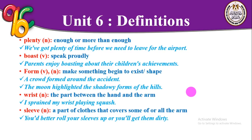We have two words related to the human body: wrist and sleeves. Wrist, as a noun, is the part between the hand and the arm. Sleeves, as a noun, is the part of clothes that covers some or all of the arm — 'al-kum.' Example: 'You'd better roll your sleeves up or you will get them dirty.'